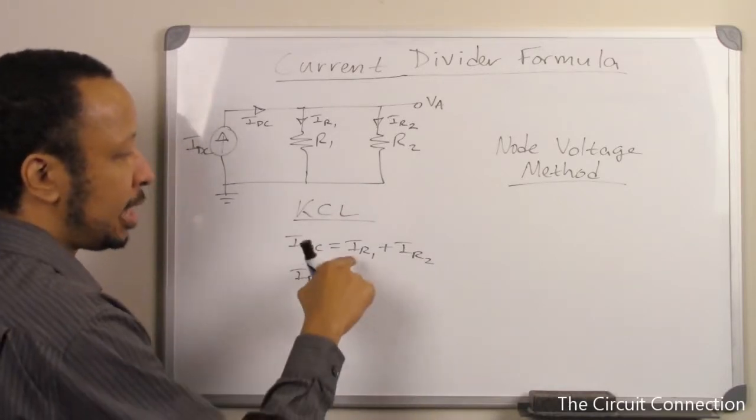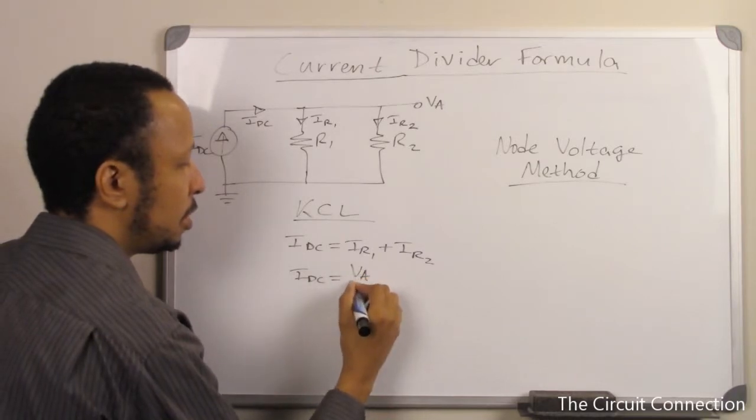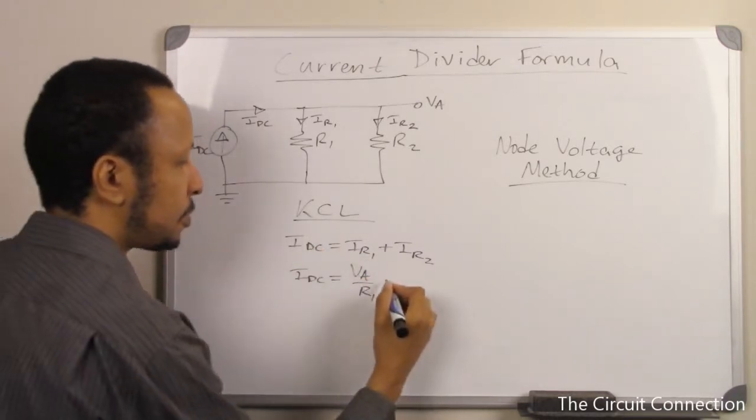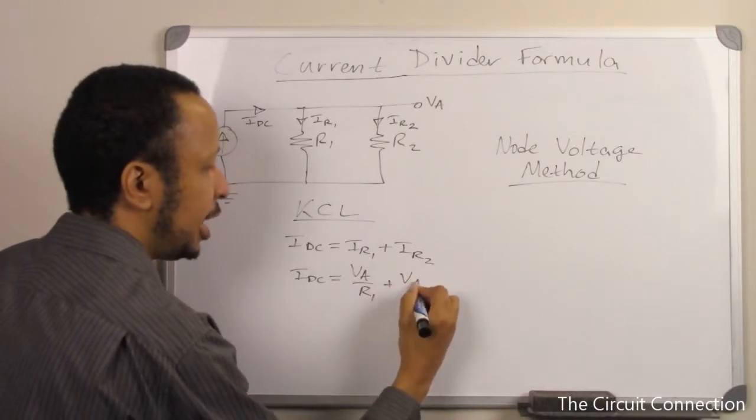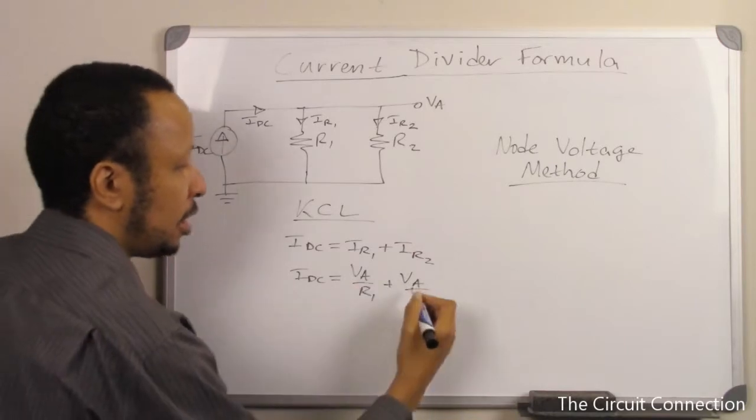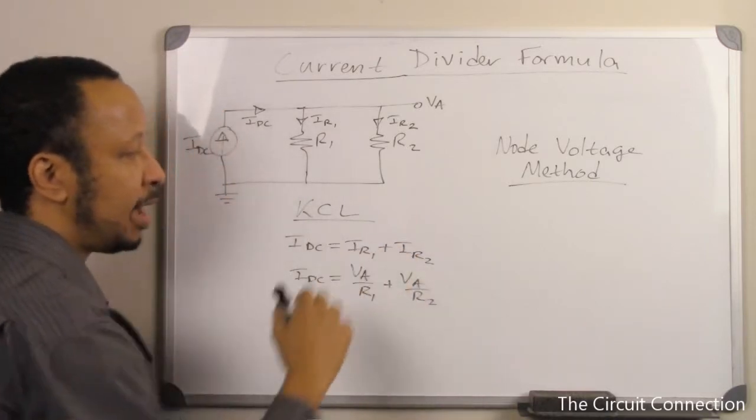We'll go ahead and use the fact that VA over R1 is going to give us IR1. Also, VA, the same voltage that both of these resistors share, is going to give us VA over R2 equals IR2.